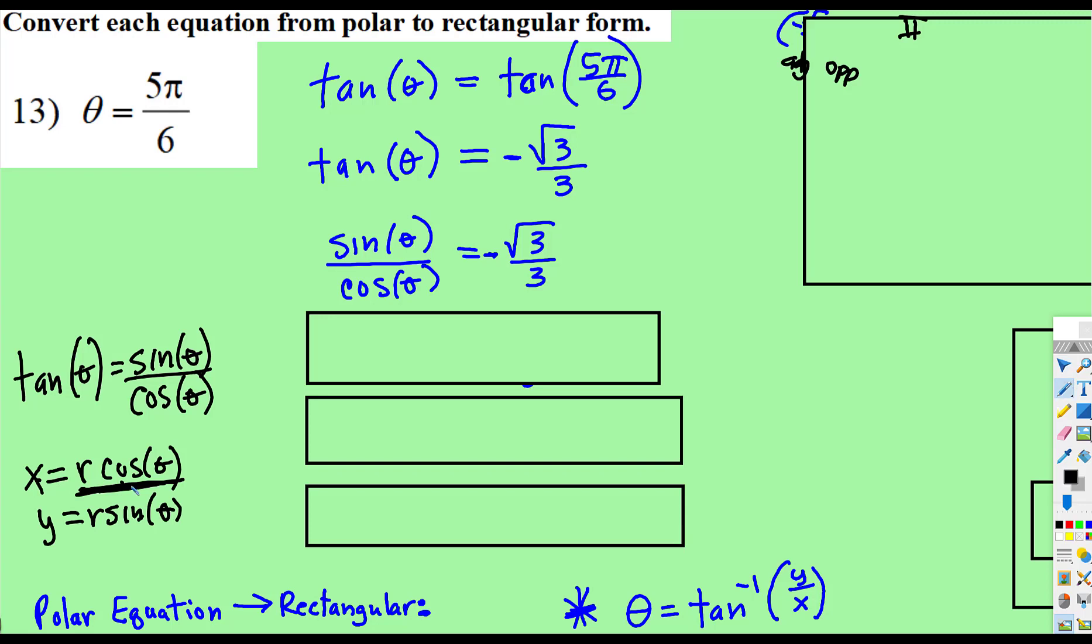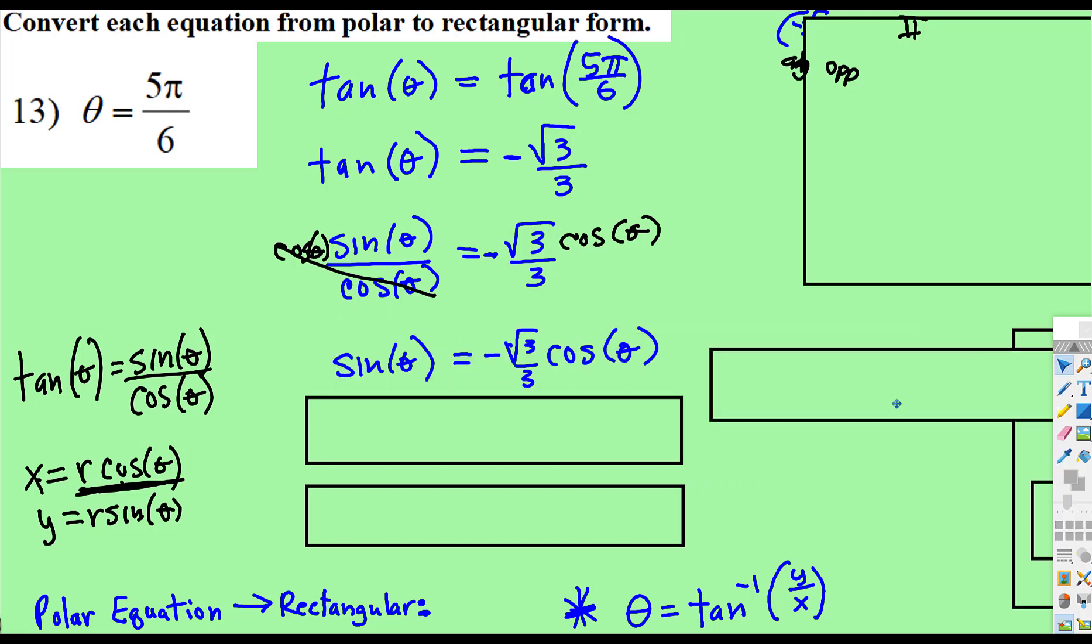and because these eventually need to be separated, I'm going to multiply both sides by cos(θ). Perfect, we have them separated.